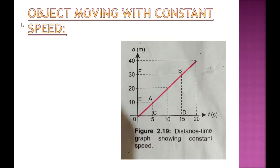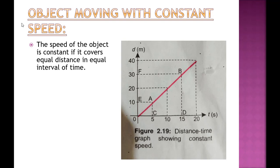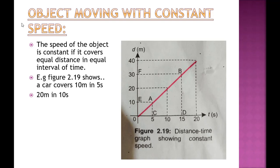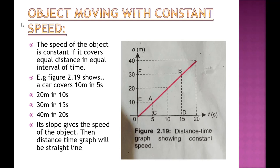For example, the car started from 0 and went to 10 meters in 5 seconds. Then from 10 to 20 meters in 10 seconds. Then from 20 to 30 meters in 15 seconds. The speed of the object is constant if it covers equal distance in equal intervals of time. Figure 2.19 shows the car covers 10 meters in 5 seconds, 20 meters in 10 seconds, 30 meters in 15 seconds, and 40 meters in 20 seconds. The slope of this graph gives the speed of the object.